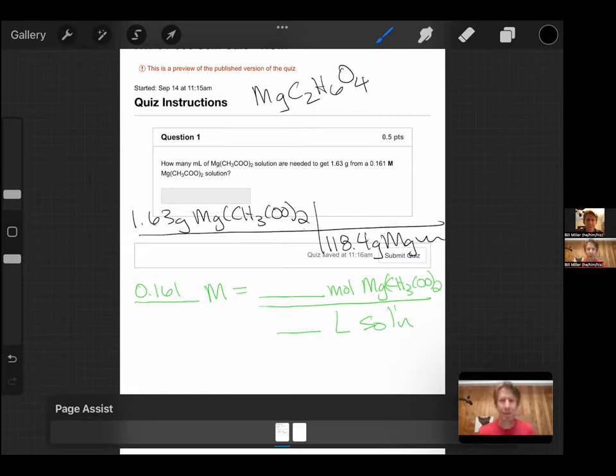I'm just going to write magnesium squiggle there. Then I can find my moles. So it's going to be 1.63 divided by 118.4. I get 0.0138 moles.